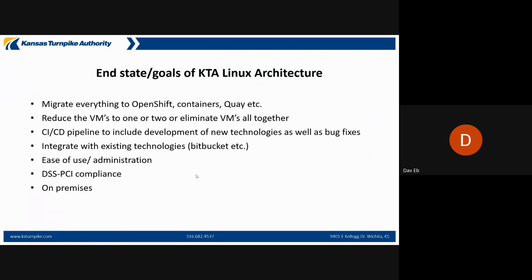The end goals are to migrate everything onto OpenShift using containers, Quay, and other tools. We want to reduce our VMs to one or two, or eliminate them altogether — we want something on its own platform. Currently, patching takes 15 to 20 minutes per machine on Linux, but longer because our VMs are hosted on a different platform and we have to go through that platform's backups and integrations before I can touch my own VMs.